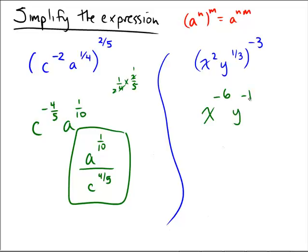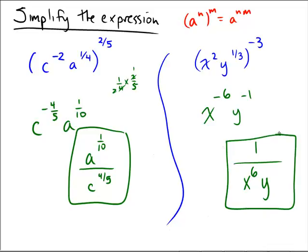So this time it looks like both of them are going to be shifted down to the bottom. I'm going to put a 1 on the top as a placeholder. I'm going to move the x to the sixth down to the bottom. And then we have a y to the first power, and so there's our little y. So 1 over x to the sixth multiplied by y.